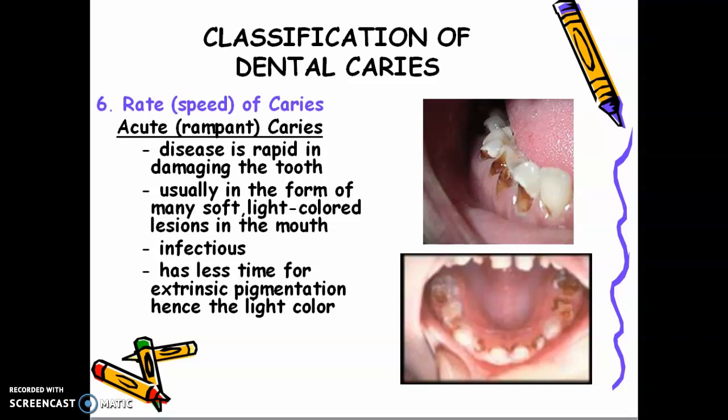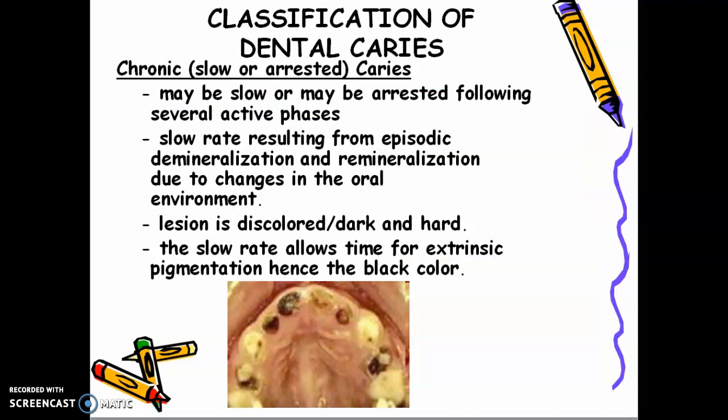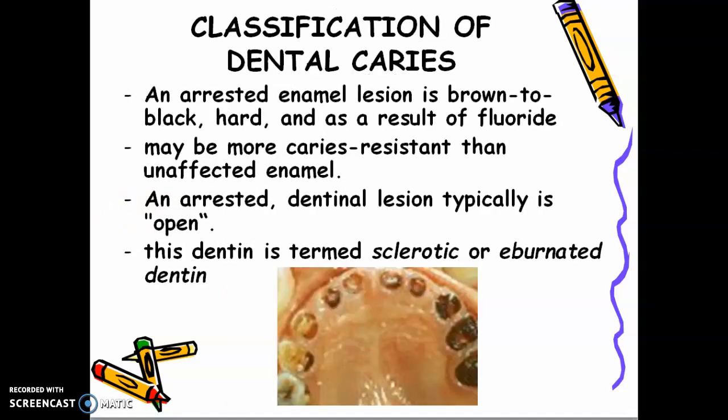The progression of caries is very fast compared to chronic, slow, or arrested caries. Chronic caries may be slow or arrested following several active phases, with slow rate resulting from episodic demineralization and remineralization due to changes in the oral environment. The lesion is discolored, dark, and hard, and the slow rate allows time for extrinsic pigmentation. When you try to excavate it with your spoon excavator, it is hard — matigas — and it is usually not painful. An arrested enamel lesion is brown to black, hard, and as a result of fluoride, may be more caries resistant than unaffected enamel.